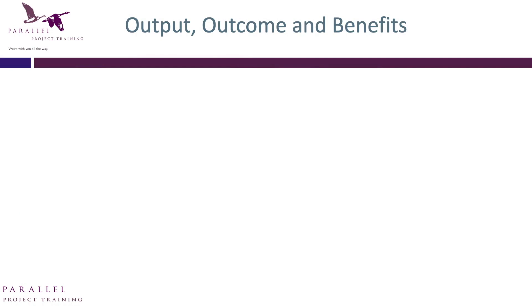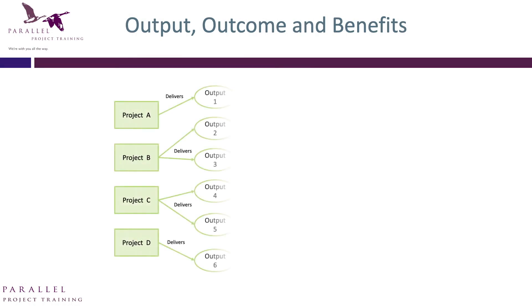What do we mean by a benefit? A project delivers an output. The output is the sum of all the deliverables — the sum of all the products we produce as part of the project.